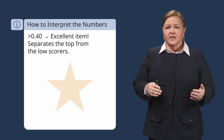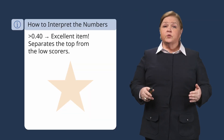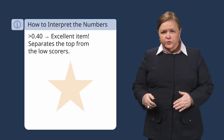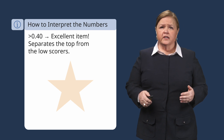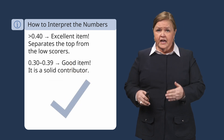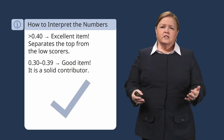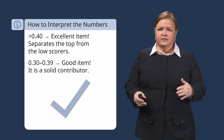When interpreting the numbers, let's look at what they mean. If the score is above 0.40, these are your star performers — these questions excellently separate knowledgeable students from those who are still learning. Point three to point three nine is good discrimination; these questions are solid contributors to your assessment.